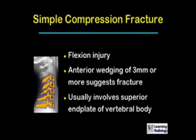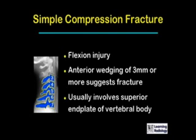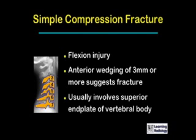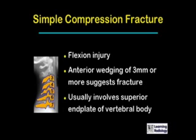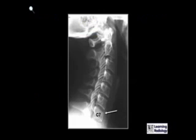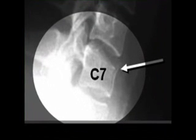Simple compression fractures are flexion injuries. There is anterior wedging of three millimeters or more, which suggests a fracture, and they usually involve the superior end plate of the vertebral body. This is an example of a simple compression fracture of the cervical spine — the white arrow is pointing to the superior end plate of C7, which is depressed anteriorly.